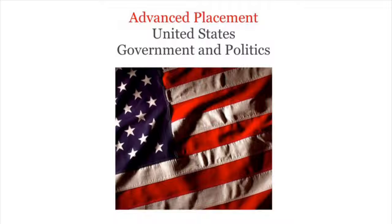Political gridlock: to the extent that the effectiveness of Congress depends on its ability to pass laws and otherwise get things done, political gridlock represents a failure of Congress to function effectively. One common scenario: each House of Congress is controlled by a different party, and they are routinely unable to compromise. As a result, legislation that passes one house is often unable to pass in the other.